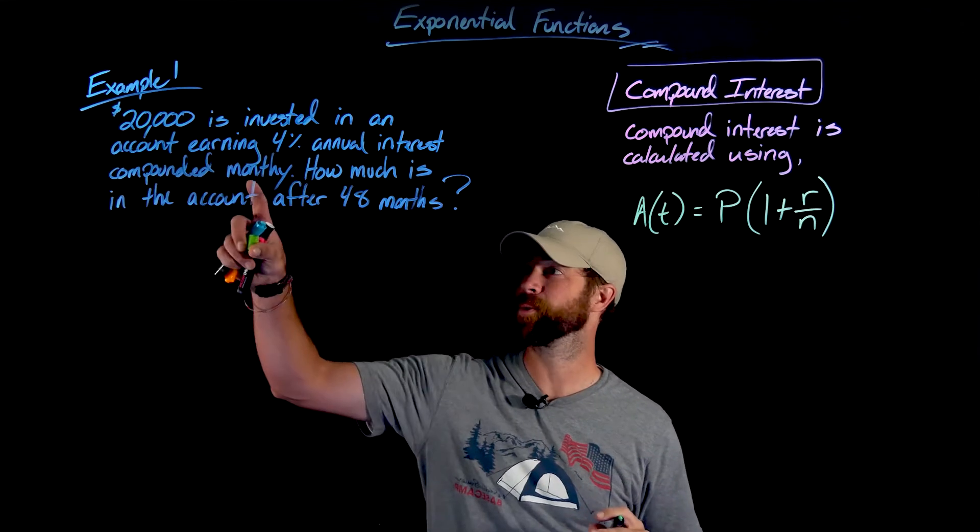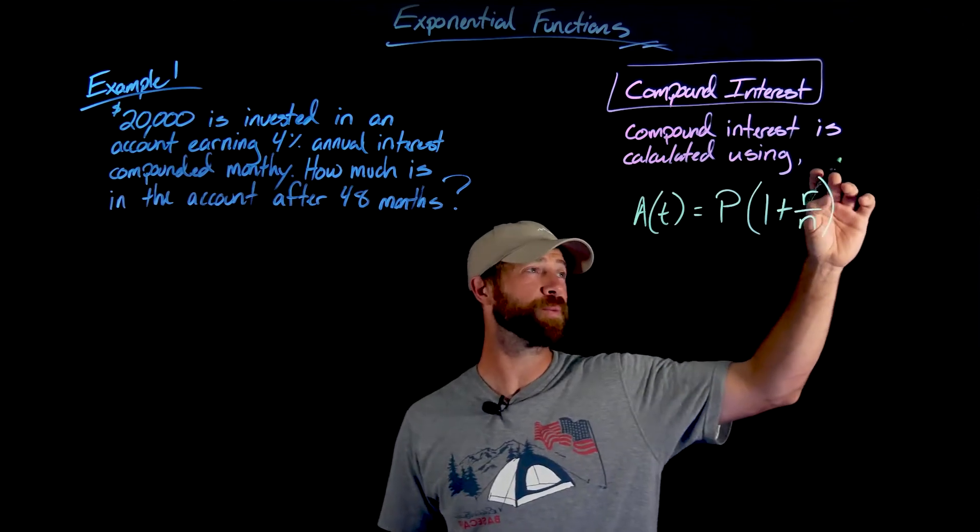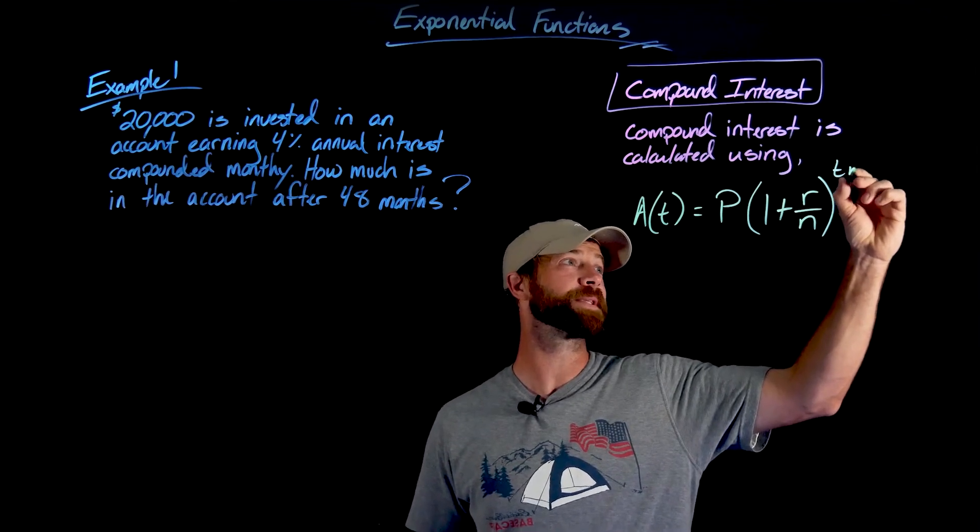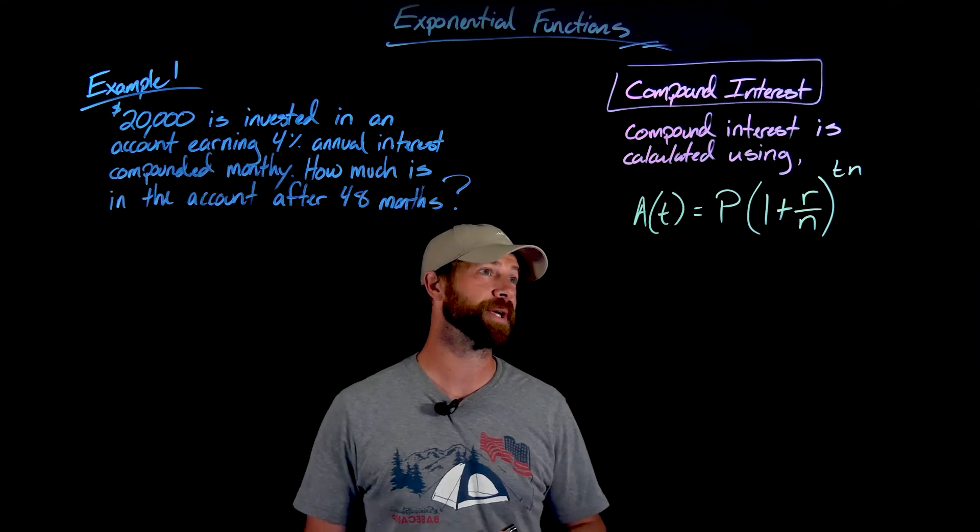Divided by the number of times you compound per year. And for us, that's going to be 12, raised to the number of years times the number of compounding periods per year.